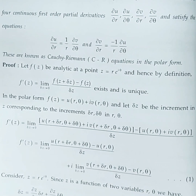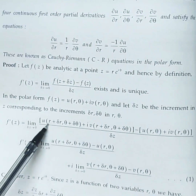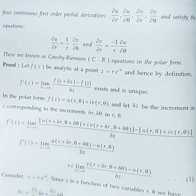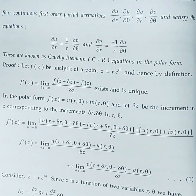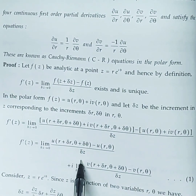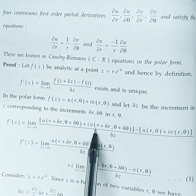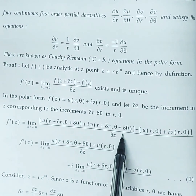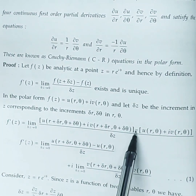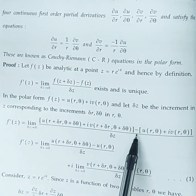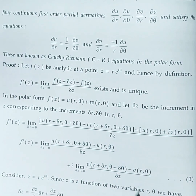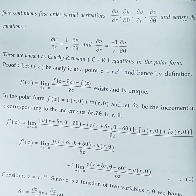Now we segregate the real and imaginary parts. The real part is [u(r + Δr, θ + Δθ) − u(r, θ)] / Δz, and the imaginary part is i·[v(r + Δr, θ + Δθ) − v(r, θ)] / Δz. So we have real part plus i times imaginary part, and we apply the limit.